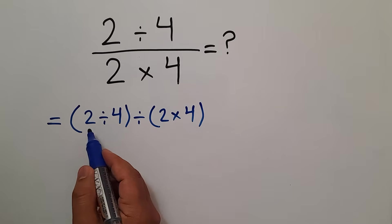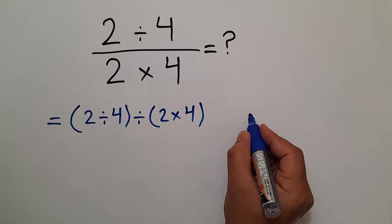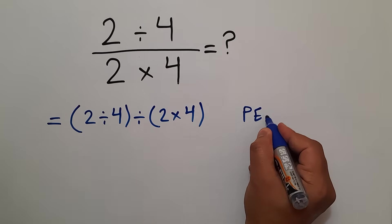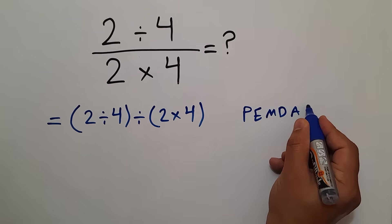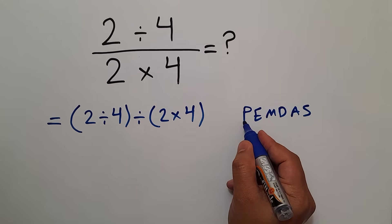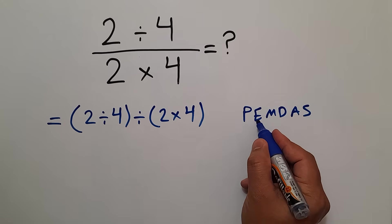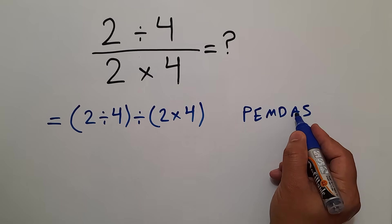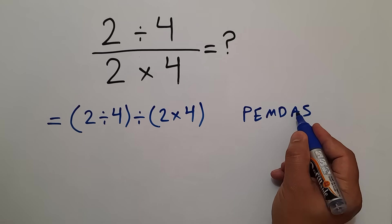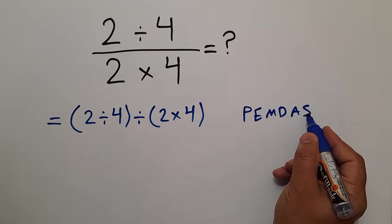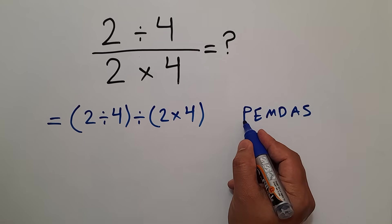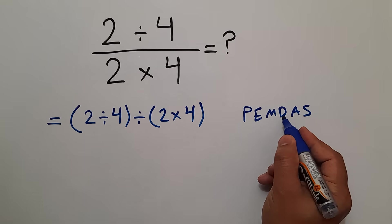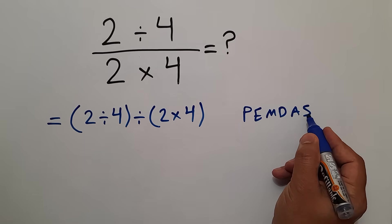According to the order of operations, which is PEMDAS: P stands for parentheses, E stands for exponents, M and D stand for multiplication and division, and A and S stand for addition and subtraction. We first do parentheses, then exponents, then multiplication and division, and finally addition and subtraction.